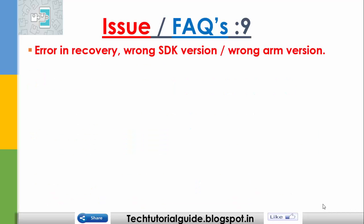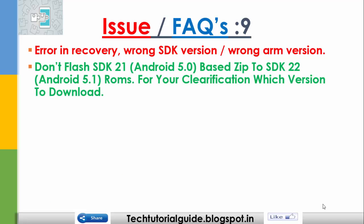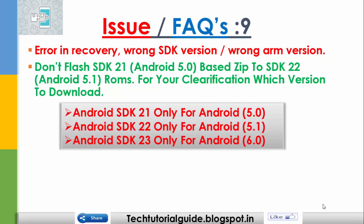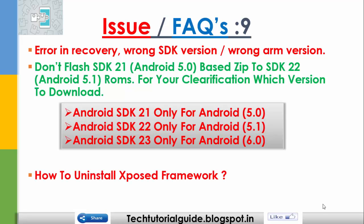If you get an error in recovery about wrong SDK version, don't flash SDK 22 when it's not appropriate — SDK 21 is for Android 5.0 and SDK 22 is for Android 5.1 ROMs. If you install SDK 21 on Android 5.1, which requires SDK 22, you will get an error in recovery.